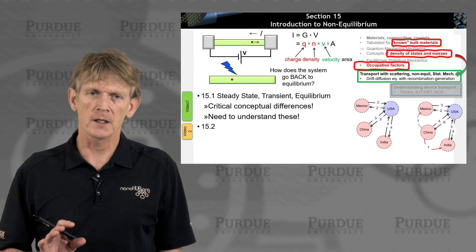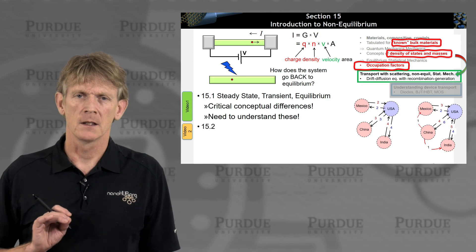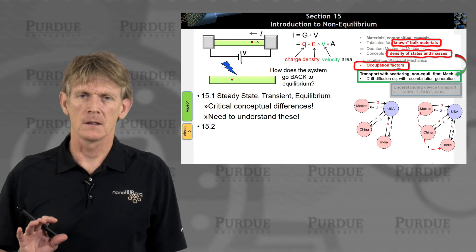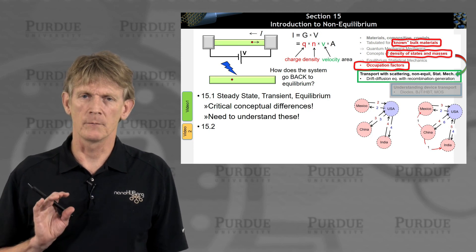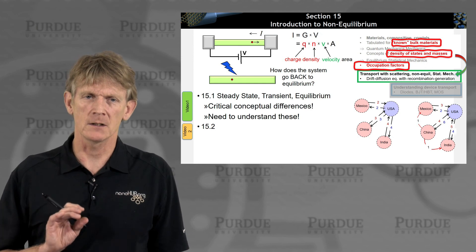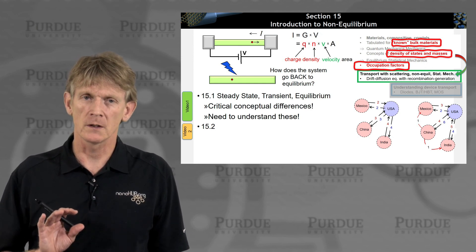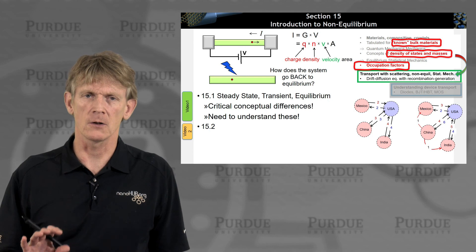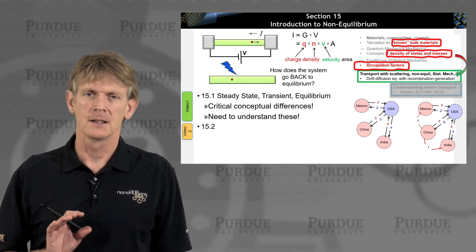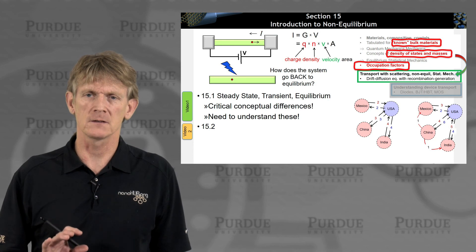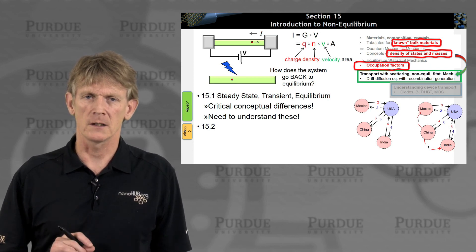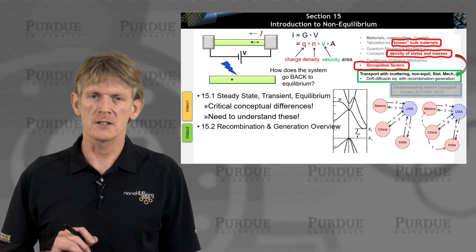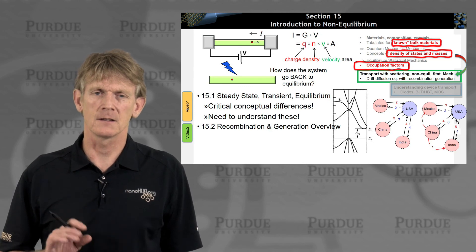It's critical to understand the difference between steady state, detailed balance, and equilibrium. Detailed balance is equilibrium — each process is counterbalanced by its reverse process. Steady state means d/dt equals zero. Those two are not the same. In equilibrium, d/dt is also zero, but that is just a subset — in equilibrium, each individual process is counterbalanced by its original process. Now let's look at some recombination and generation processes in these devices.